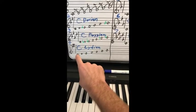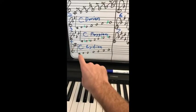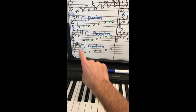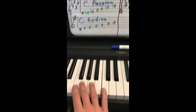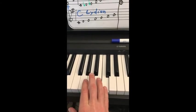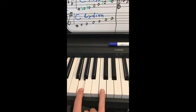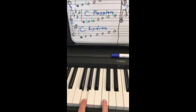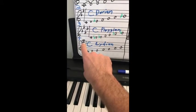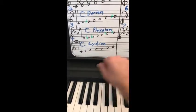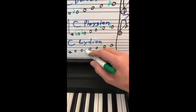Next, C Lydian. That's the fourth mode. From what key, or in what key, is C the fourth note? Find C. What's a perfect fourth down? G. C is a fourth, or C Lydian is the fourth mode of G major. G major is the key of one sharp. That's F sharp. I'm going to put that in. F sharp.